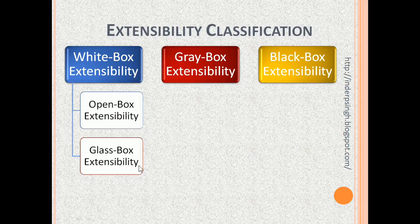In glass box extensibility, the original source code is untouched and other developers write their own extensions. Glass box extensibility needs the original source code to be available, but the software license does not permit modifications. Glass box extensibility is safer than open box extensibility because it does not change the original source code, so it cannot break any clients of the original software.